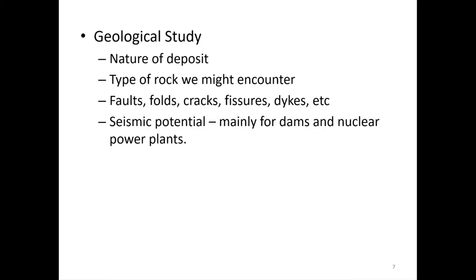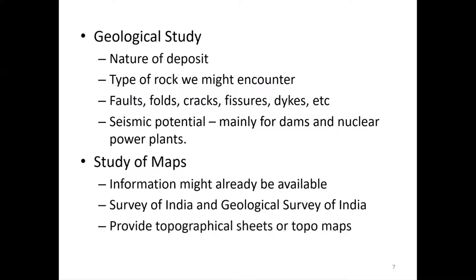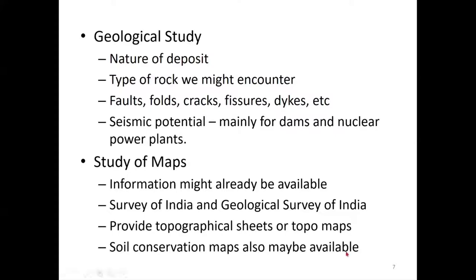Zone 5 has the highest seismicity — most of northeast India and northeast Himalayas fall under zone 5, while north and central Himalayas are mostly under zone 4. Different maps are available, such as the GSI (Geological Survey of India) map, Survey of India map, topographical sheets, and soil conservation maps. From these maps, you get a first-hand idea of what type of soil or rock might be at your site and at what depth.